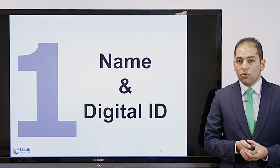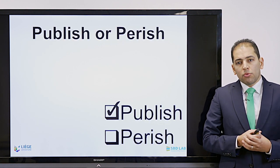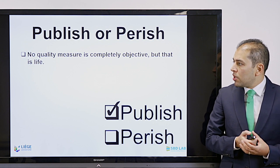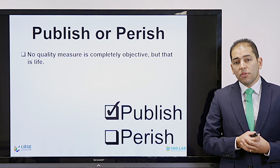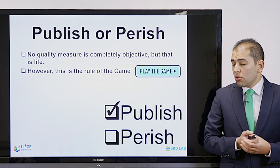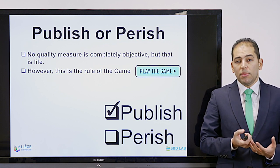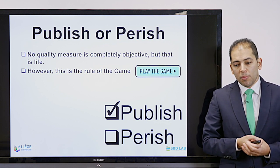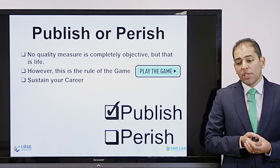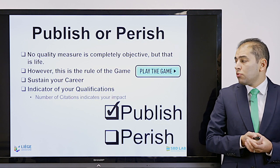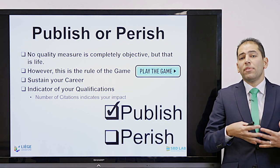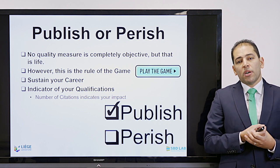Let's start with name and your digital ID. We all know that we are operating under the mode of publish or perish, and this is part of the academic world. No quality measure is completely objective, but that is life. Even though many people would say publishing is not the quality measure, this is life and we have to accept it. This is the rule of the game — if you want to join academia or the scientific world, you have to be able to publish consistently and bring quality with it.